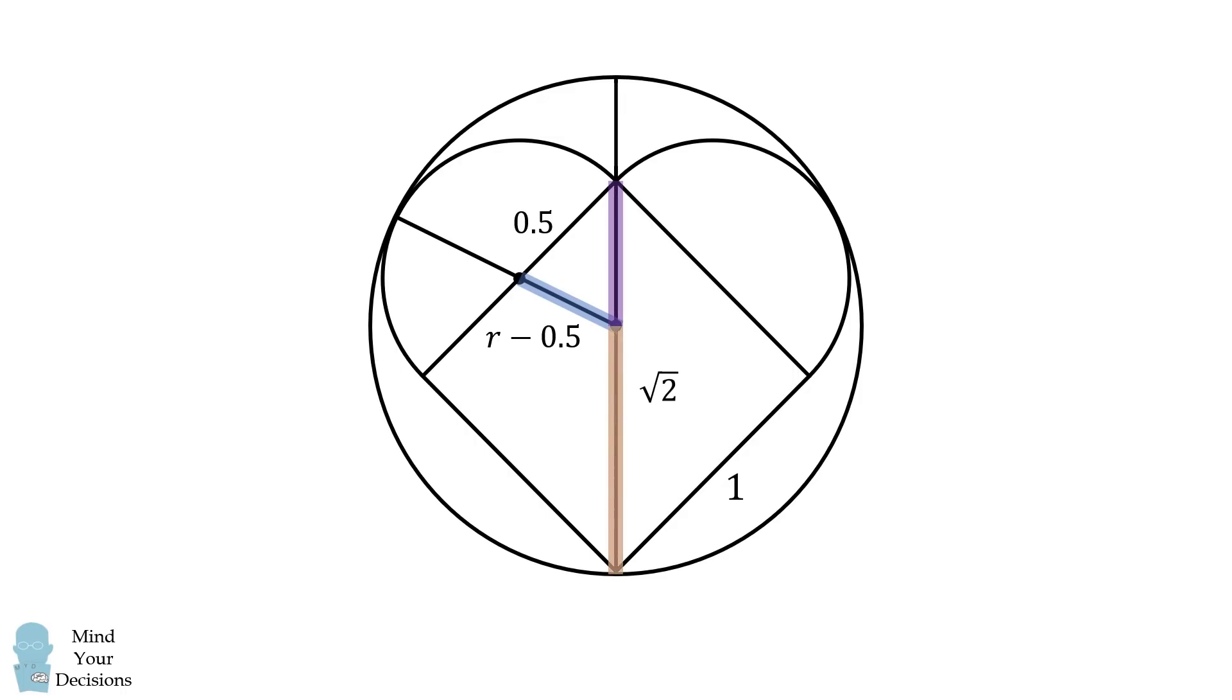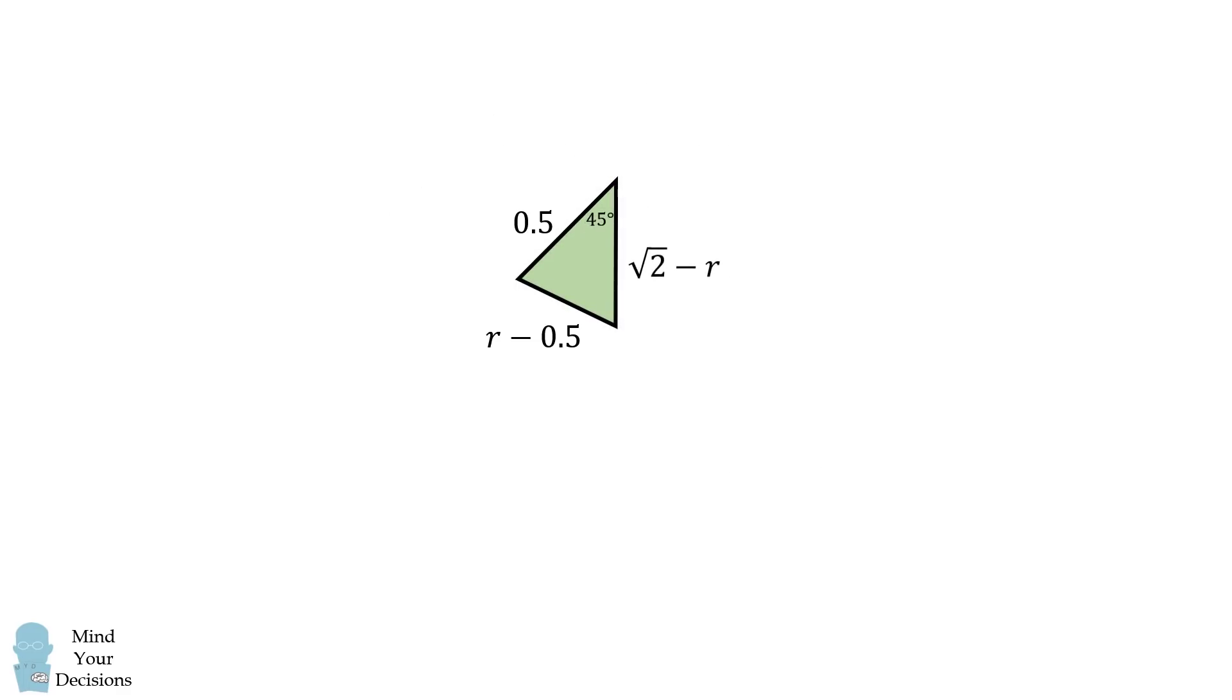Next, notice this is a radius of the large circle. Therefore, this distance will be equal to the square root of 2 minus r. We also know that one of the angles in this triangle will be equal to half of 90 degrees, or 45 degrees. We can thus focus on this triangle and its lengths. We've reduced this problem to one of trigonometry.